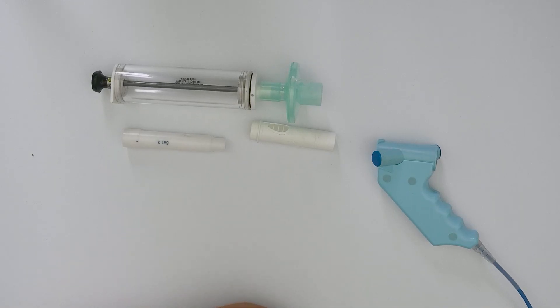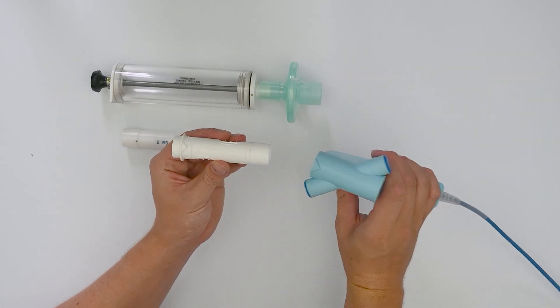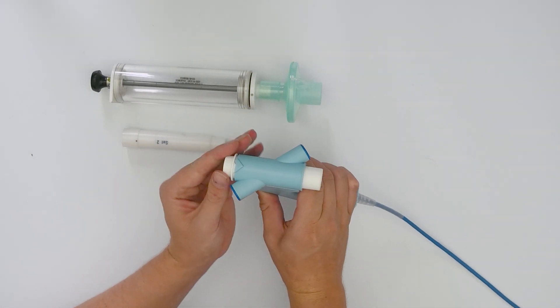Insert a spirette into the flow head. The triangle on the spirette should be aligned with the triangle on the flow head.